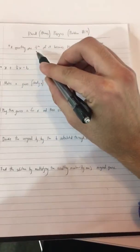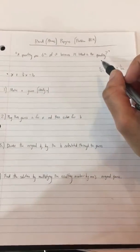And problem number 24 states that a quantity plus 1/7th of it becomes 19. Now what is that quantity?